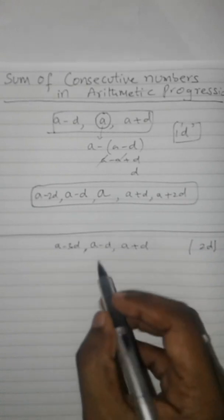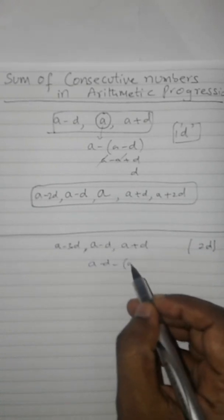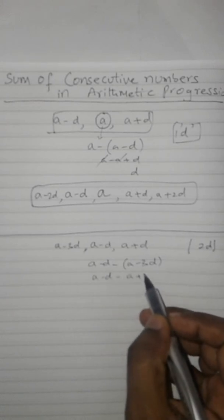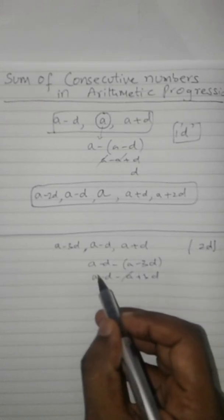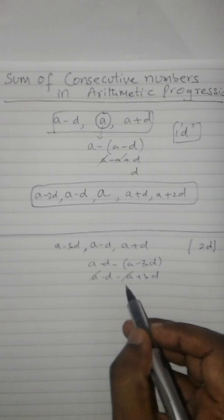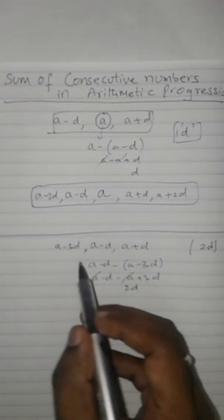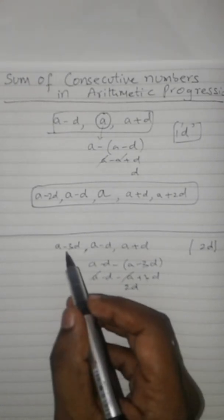So before that, it should have a minus 3d. The reason is, if I subtract a minus 3d from a minus d, and if you multiply, the negatives cancel and 3d minus d will remain as 2d. So the four terms are a minus 3d, a minus d.